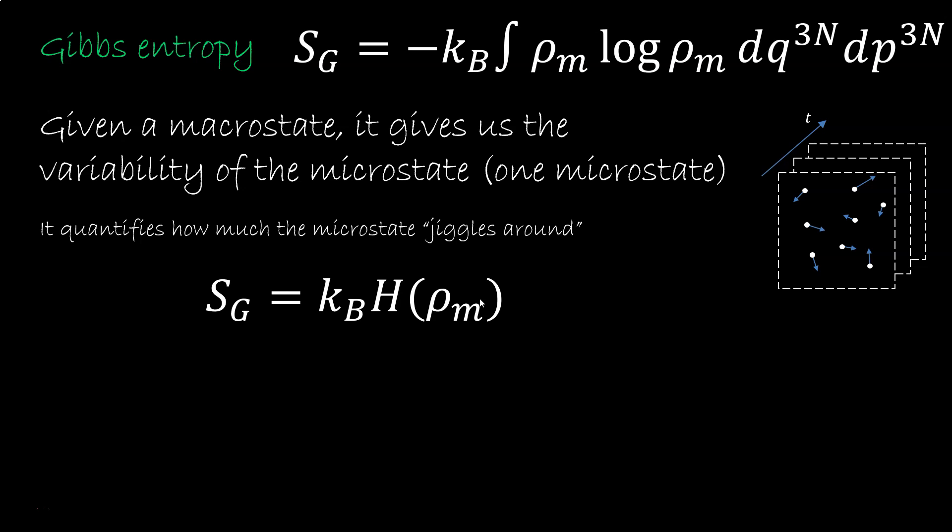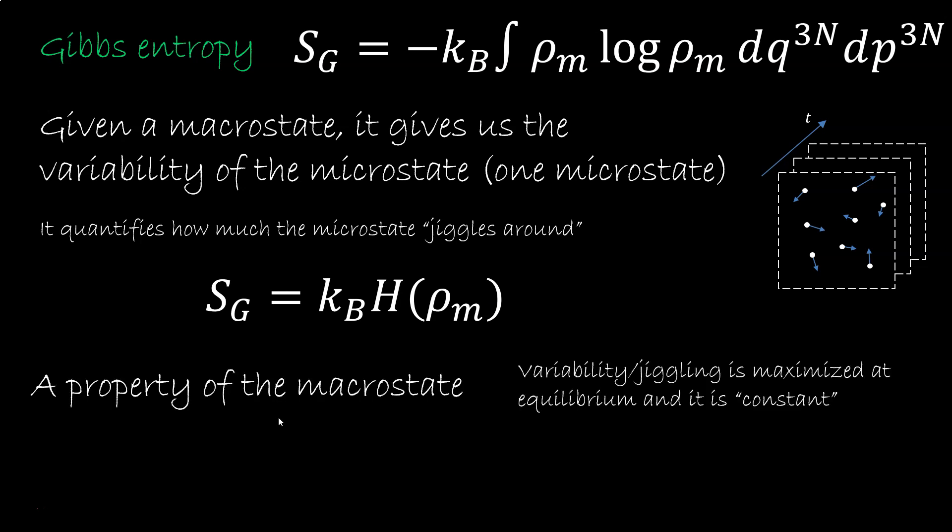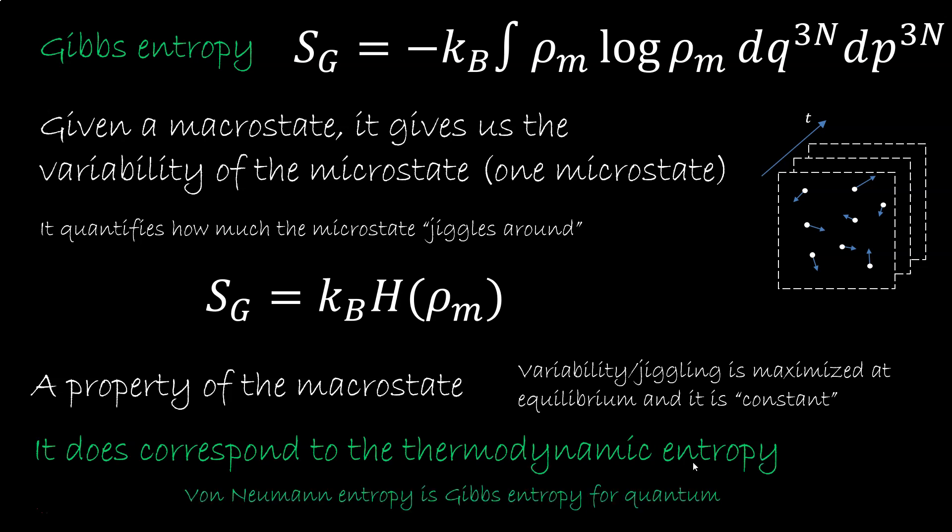Unlike the Boltzmann entropy, the Gibbs entropy is not a property of the microstate, but a property of a macrostate, of the ensemble. At equilibrium, the probability distribution stabilizes, the jiggling is maximized, and it is constant. So the Gibbs entropy does correspond to the thermodynamic entropy. The von Neumann entropy in quantum mechanics is the quantum analog of the Gibbs entropy, so we are not going to look at it specifically.